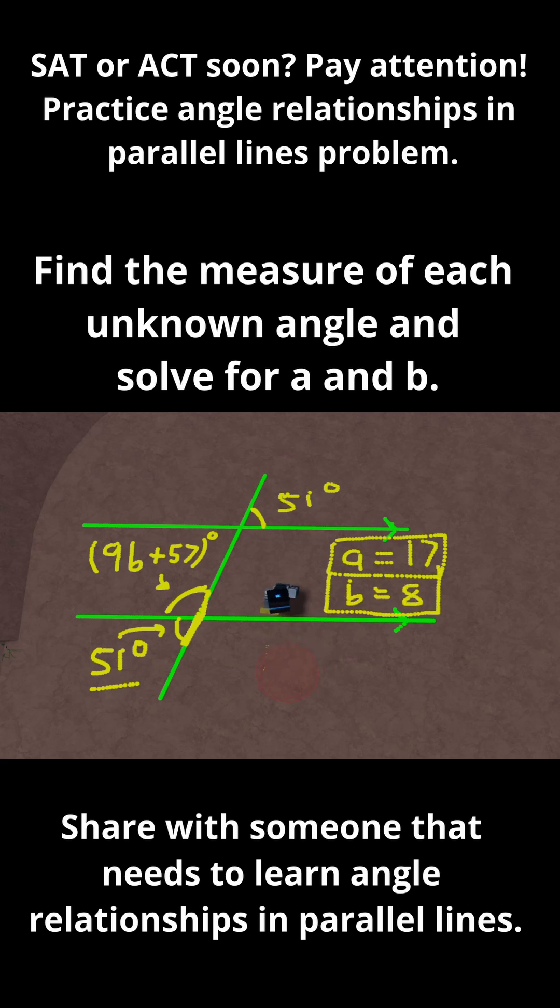Now I need to find what 9b plus 57 is equal to. To do that, I'll do 180 minus 51 since these are supplementary angles. And that's equal to 129. So I can rewrite all of this as 129. So I've solved for a and b and I found each unknown angle in this problem.